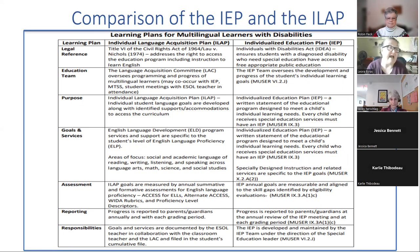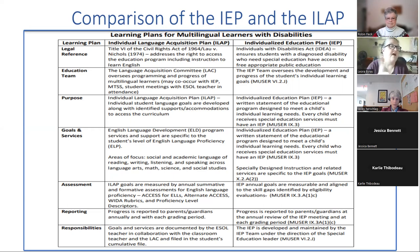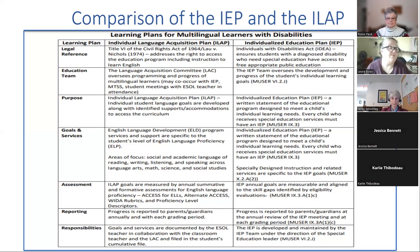This is a comparison of the IEP and the ILAP. For the ILAP, the legal reference comes out of the Civil Rights Act of 1964/1974, addressing the right to access education including instruction to learn English. IEPs come out of the Individuals with Disabilities Education Act, IDEA, which ensures students with exceptionalities have access to FAPE. The Language Acquisition Committee oversees programming and progress of multilingual learners, and co-occurs with an IEP if needed, MTSS or RTI, and student meetings with the ESOL teacher in attendance.